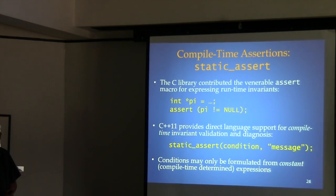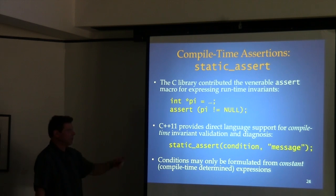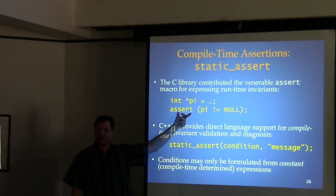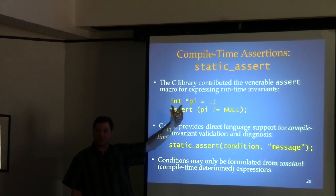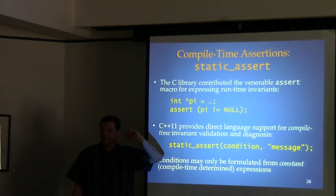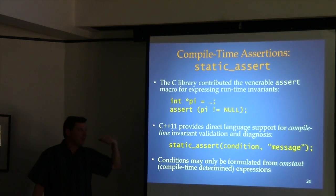An easy one: in old C++ with nested template specializations, you were obliged to put a space between the closing angle brackets — otherwise the parser would see `>>` as the right-shift operator. Now you don't have to.